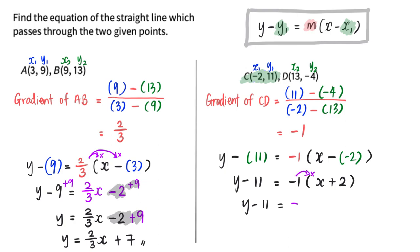I will add 11 to both sides, so what you will see is y equals negative x minus 2 plus 11. Finally, the final answer is y equals negative x plus 9.